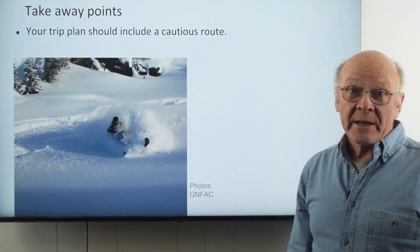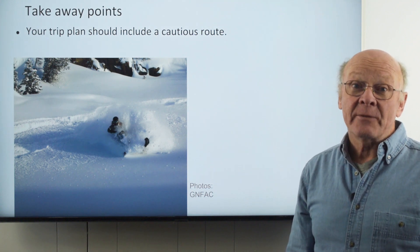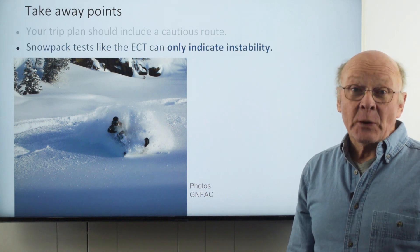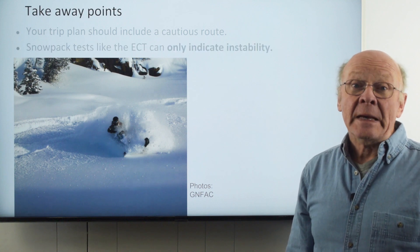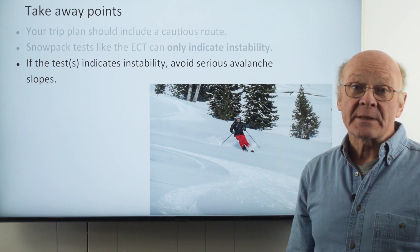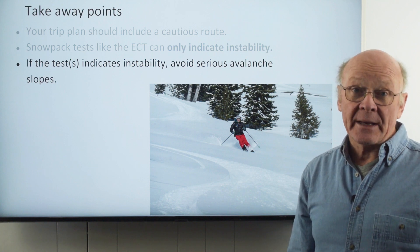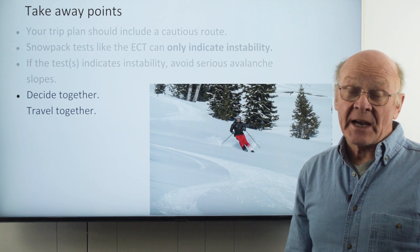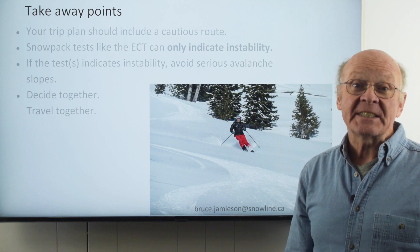Summing up: the trip plan you make with your group should normally include two routes, one of which cautiously avoids serious avalanche slopes. Recognize that snowpack tests like the extended column test can only indicate instability. If any of your tests indicate instability, avoid serious avalanche slopes — this may mean turning around or switching to the more cautious route in your trip plan. You've chosen to travel together, so you should decide together at each decision point. We welcome your comments on the ideas in this video.